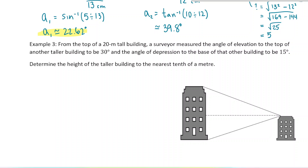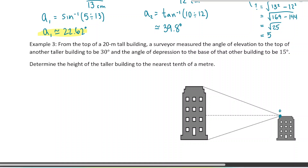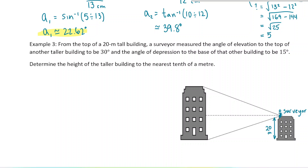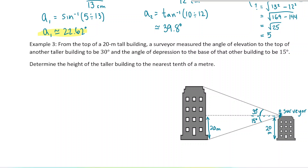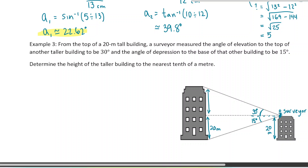Say I have two buildings. A surveyor is standing on top of a 20-meter tall building trying to figure out how tall the big building across the street is. The angle of elevation to the top of the other building is 30°, and the angle of depression is 15°. Remember, angles of elevation and depression are always measured from the horizontal — so the angle looking up is 30° and the angle looking down is 15°. We know the smaller building is 20 meters tall.